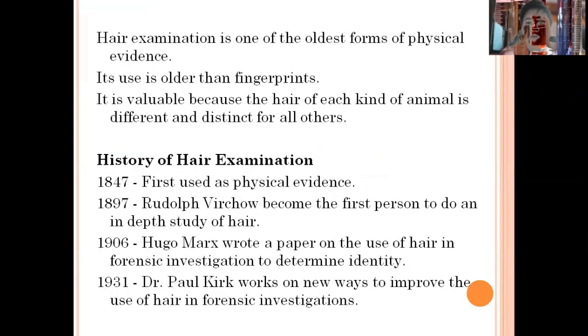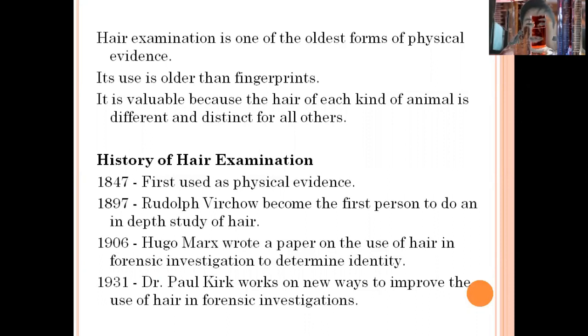For our next discussion, we are going to discuss hair and textile fibers in connection with forensic chemistry. Going to the background of forensic chemistry when it comes to the examination of hair, take note that it is the oldest form of physical evidence — surprisingly, it is much older than fingerprinting. It is a valuable physical evidence because we can now distinguish human hair from animal hair or fibers that resemble hair.